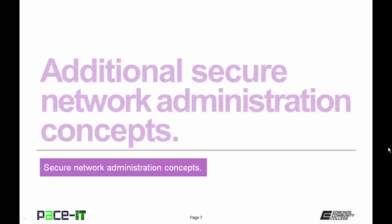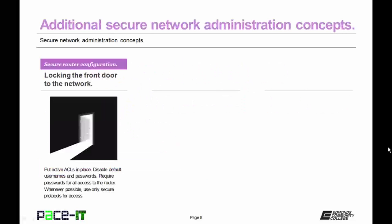Now let's move on to some additional secure network administration concepts. The first one is secure router configuration — that's locking the front door to your network. Put active ACLs in place, disable default usernames and passwords, require passwords for all access to the router, and whenever possible, use only secure protocols to access the router.